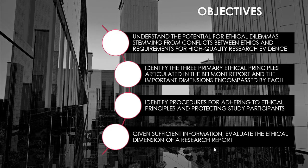The following objectives guide our discussion for today. First, understand the potential for ethical dilemmas stemming from conflicts between ethics and requirements for high quality research evidence. Second, identify the three primary ethical principles articulated in the Belmont Report and the important dimensions encompassed by each. Third, identify procedures for adhering to ethical principles and protecting study participants. And lastly, given sufficient information, evaluate the ethical dimensions of a research report.